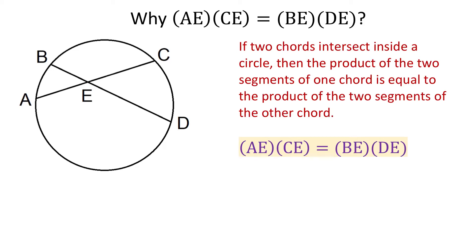In this figure, we have a circle with two chords, AC and BD. They intersect at point E, and the following line segments are formed: AE, CE, BE, and DE. If two chords intersect inside a circle, then the product of the two segments of one chord is equal to the product of the two segments of the other chord. That is, AE multiplied by CE equals BE multiplied by DE.